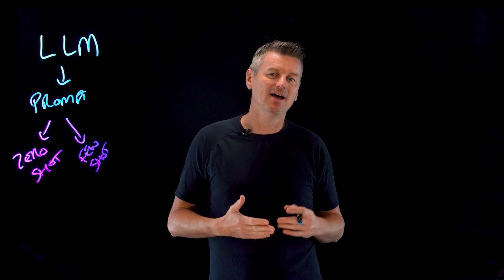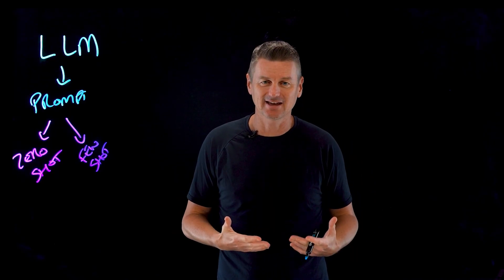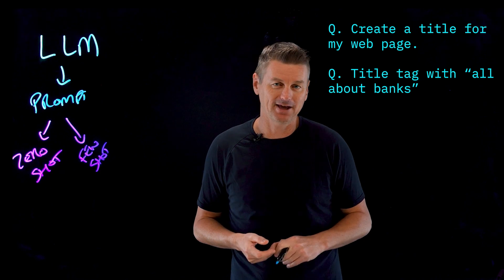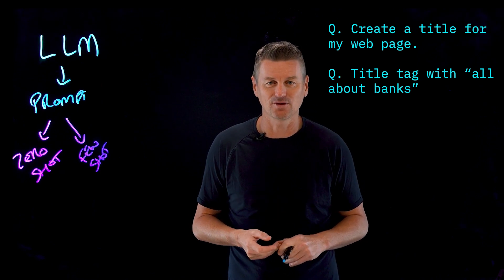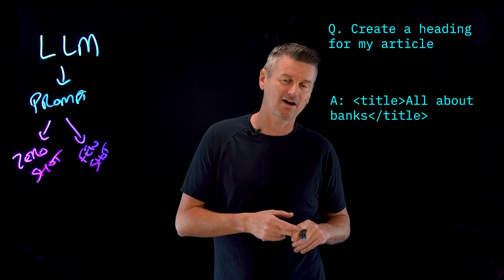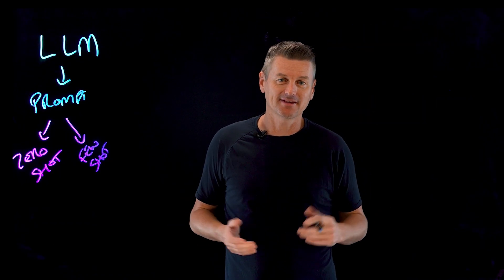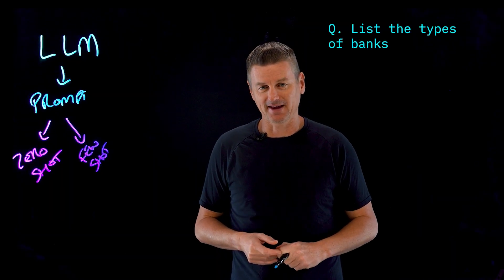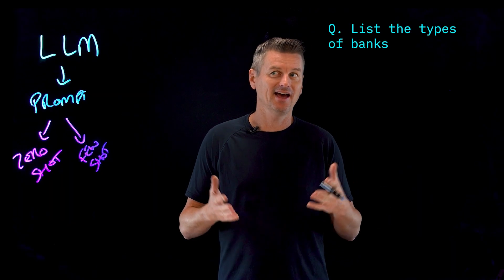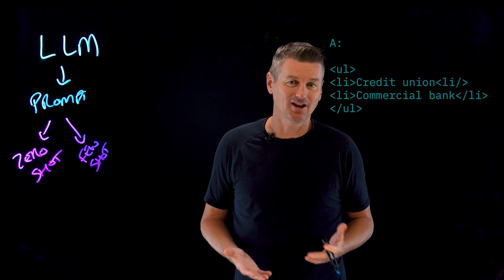Few-shot prompting can help an LLM understand the expected format a response should take. For example: Question: 'Create a title for my webpage,' then a title tag with 'All About Banks.' Question: 'Create a heading for my article,' then an H1 tag with 'Types of Banks.' Then the question: 'List the types of banks.' Here the LLM may derive that we are looking for answers in HTML notation and respond accordingly.